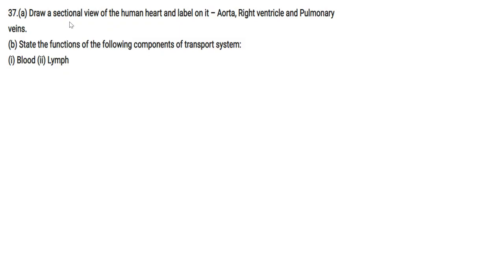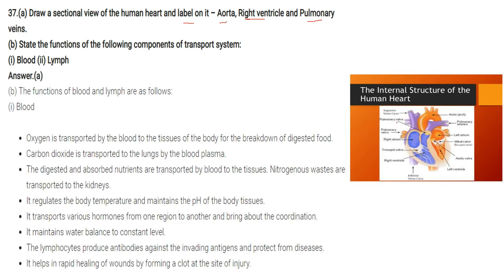Draw a sectional view of the human heart and label the aorta, right ventricle, and pulmonary veins. The main parts are: right atrium, left atrium, right ventricle, and left ventricle.